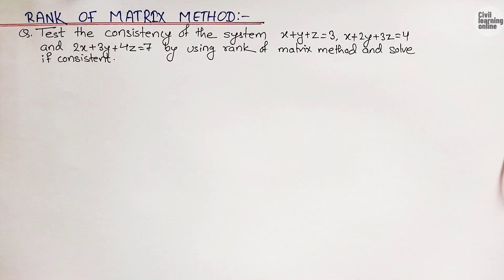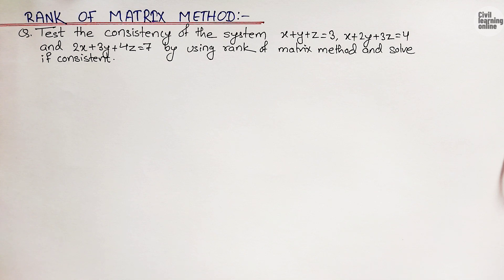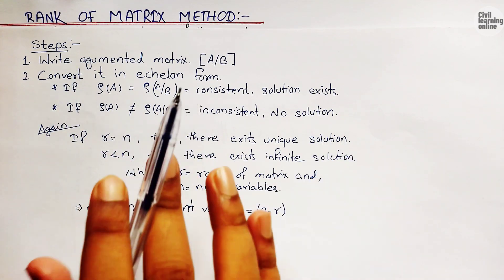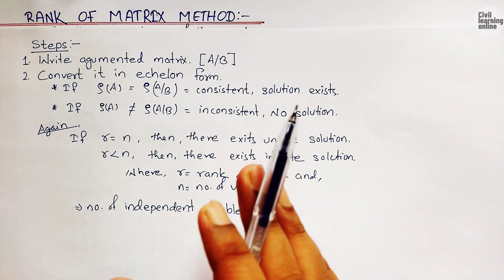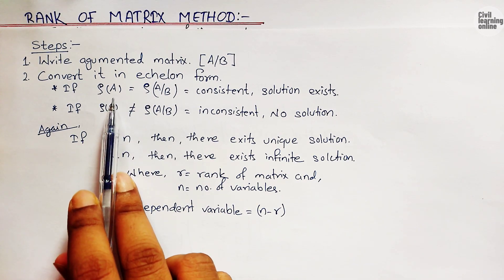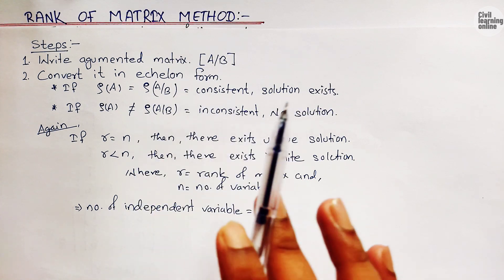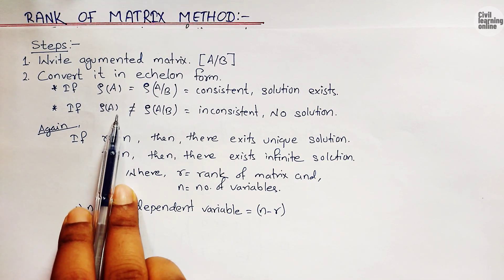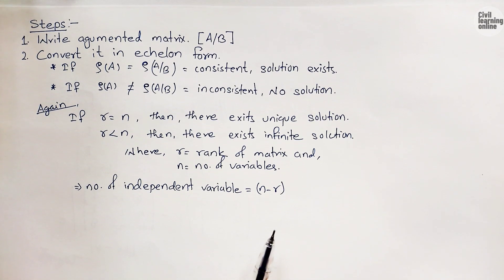Before solving this problem, we must be familiar with the statement of the rank of matrix method. The statement says: write down the augmented matrix of the given system, convert it into echelon form by applying row operations. Then check if the rank of matrix A equals the rank of the augmented matrix. If equal, the system is consistent and a solution exists. If not equal, the system is inconsistent and no solution exists.